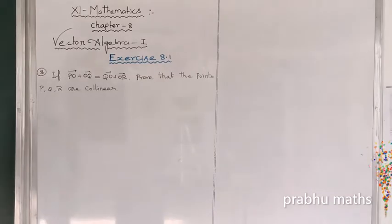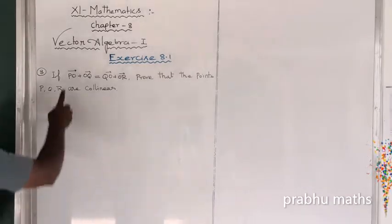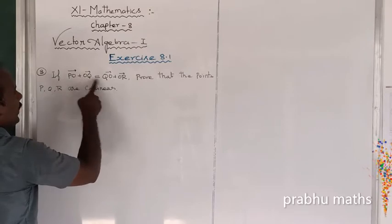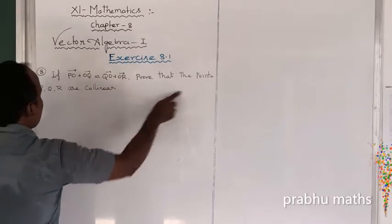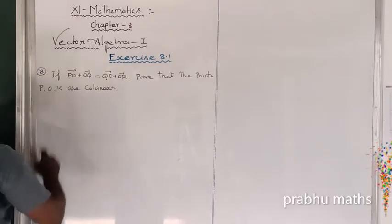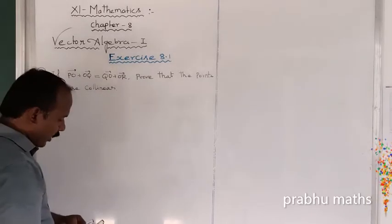Exercise 8.1: If PO vector plus OQ vector is equal to QO vector plus OR vector, prove that the points P, Q, R are collinear. Collinear means 3 points in a straight line.